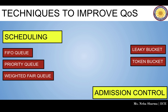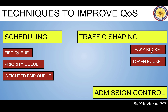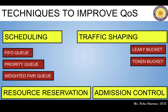Next are the techniques to improve quality of service. The first is scheduling, which includes FIFO queue, priority queue, and weighted fair queue. The second is traffic shaping, which includes leaky bucket and token bucket. The third is resource reservation and the fourth is admission control. Scheduling deals with how packets from different flows are treated fairly at a switch or router. Traffic shaping is a mechanism to control the amount and rate of traffic sent to the queue.